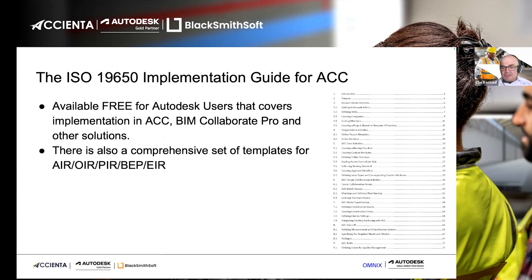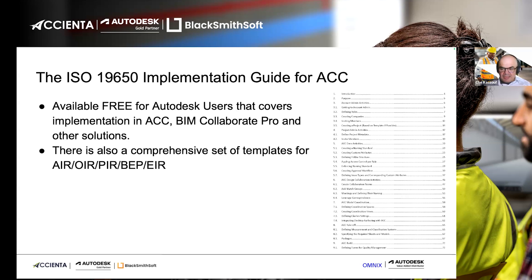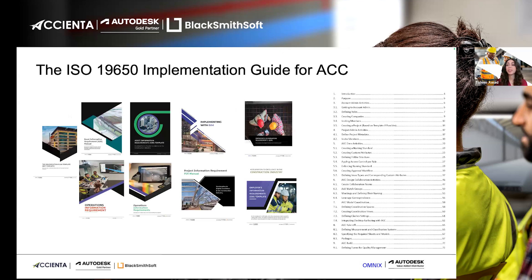What I've shown you are screenshots from the system, but we also have an ISO 19650 Implementation Guide for ACC, available free for all Autodesk users — contact Axienta for this. On the right-hand side you can see a table of contents for this approximately 90-page document with screenshots and step-by-step instructions for every part. There is also a comprehensive set of templates for the EIR, PIR, and other standard documents. Thuleen will now take the lead and elaborate further on these documents.